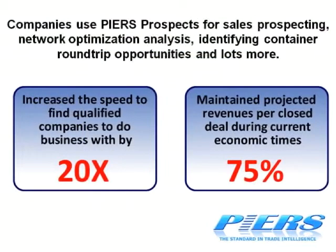In summary, Peers Prospects allows you to accomplish three key things. One, generate quality sales leads in minutes, which will increase your sales pipeline, improve your close ratio, and increase overall sales productivity. Two, identify your competitors by quickly identifying similar companies shipping and receiving in a specified region.